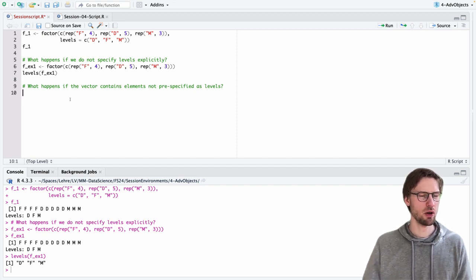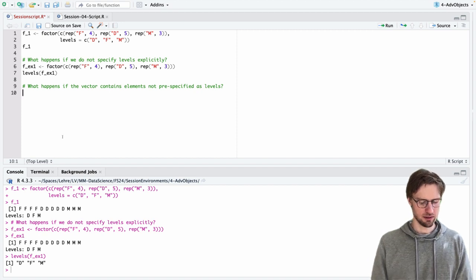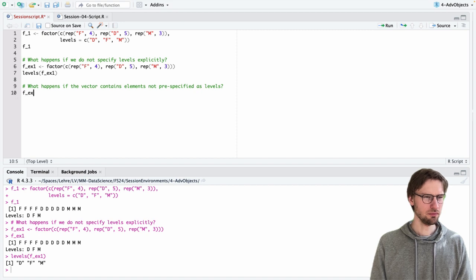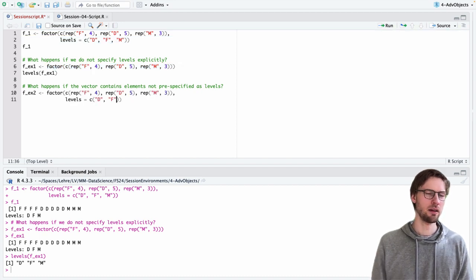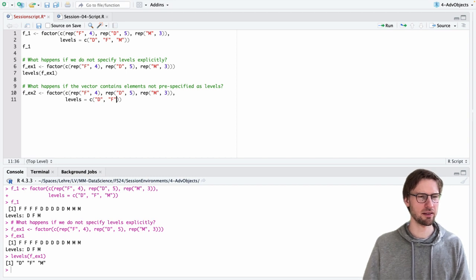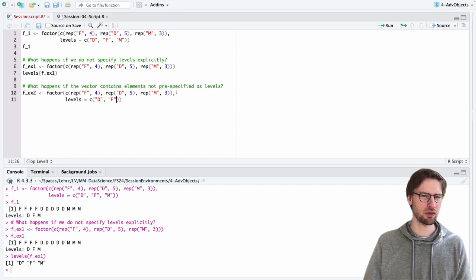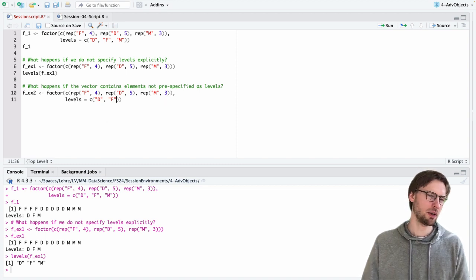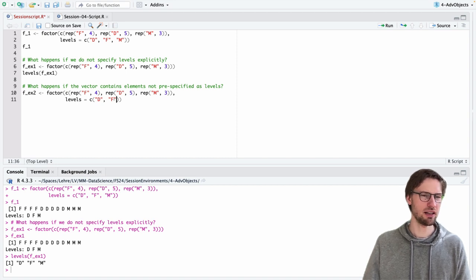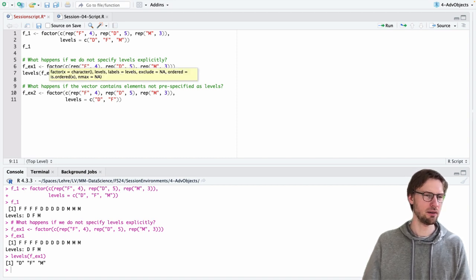And this begs the question, what happens if we create a factor, let's call it f underscore two, and that this factor now contains some elements that were not specified as levels explicitly. So in this case here, we have a factor that contains the elements f, d, and m. So if we just turned this vector into a factor, the factor would have the levels f, d, and m. But here we now set the levels explicitly, but only to d and f. So let's see what happens.